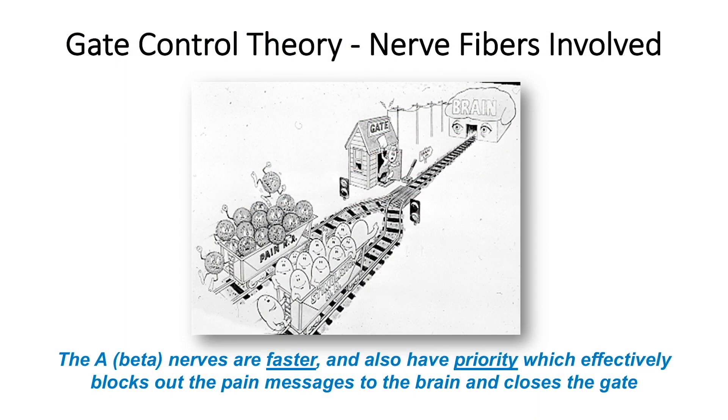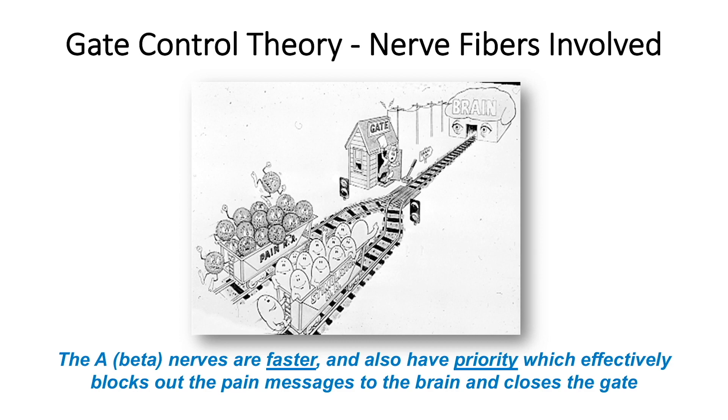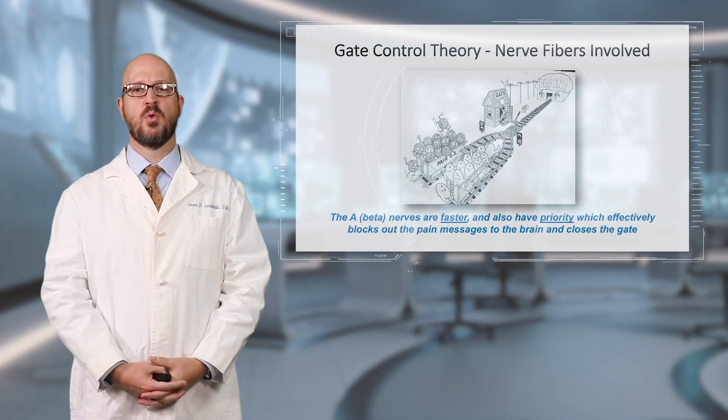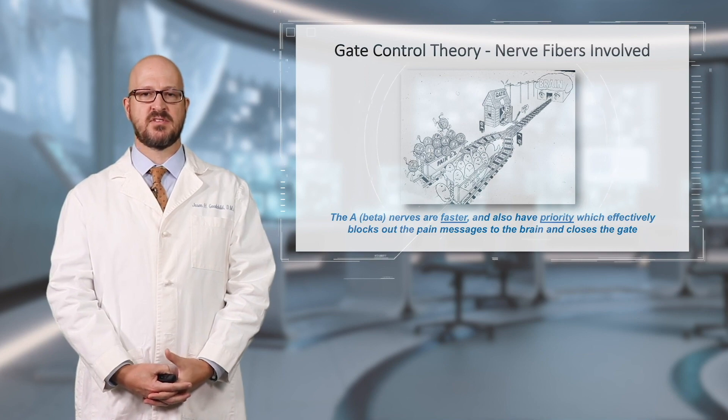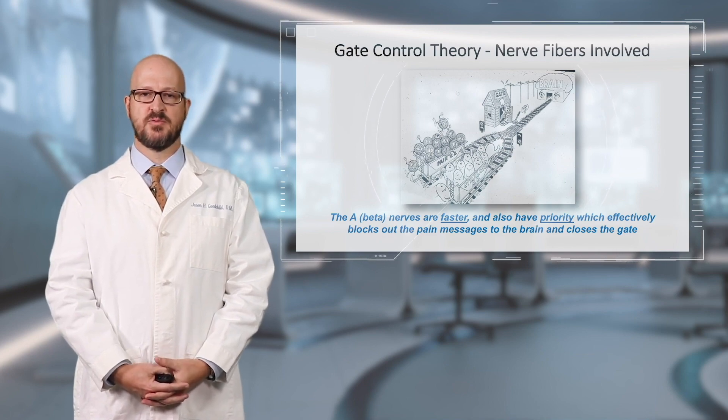Again, the gate control theory—and I love this picture. This picture helps to illustrate what we're talking about. Again, you have two competing stimuli. The one that gets there first will be the one that is felt by the brain, and we know from that previous graph that the type A beta fibers will win that race.